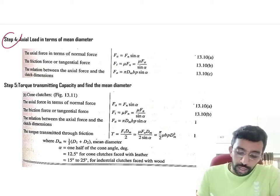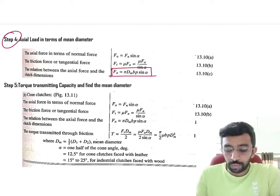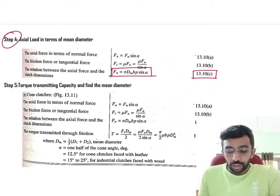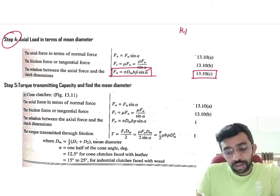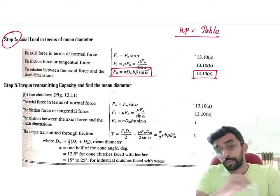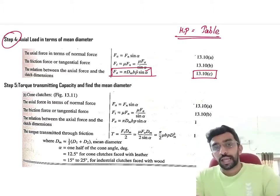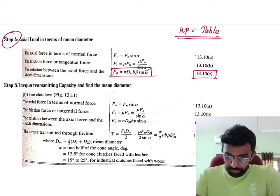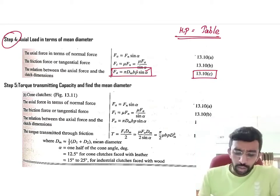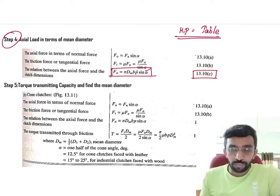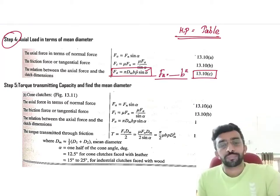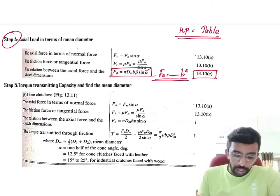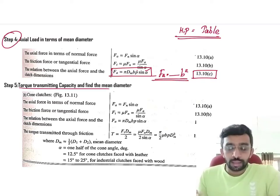Let's move forward. In step number four, we are going to calculate the value of F_a using this equation 13.10c, axial force. Here we have the value of sin α, pressure, and friction μ and p can be taken from the table. This details about the table was also given in the previous design procedure. That same table is applicable for all the type of clutches. Here you have already taken the value of dm in terms of b. If you substitute it here, you are going to get the value of F_a in terms of b². That's the only thing. You are not going to get a solid value.